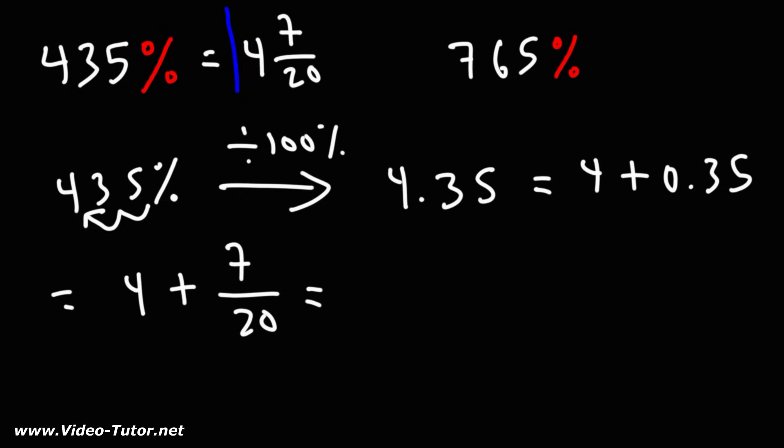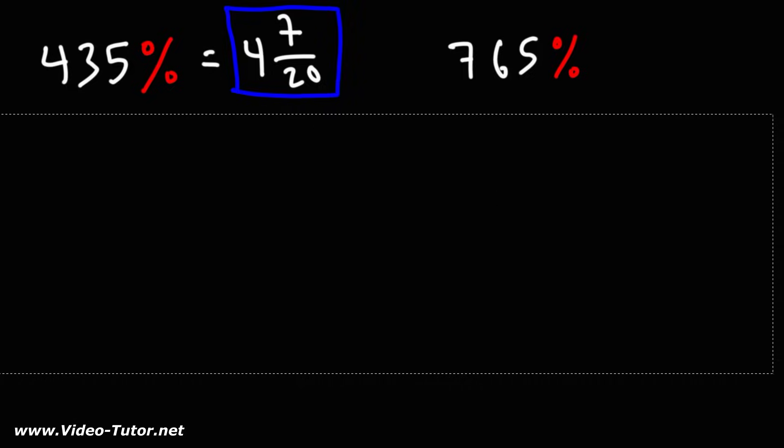That is, 7 over 20. So that's how we can convert a percentage into a mixed number. Now, let's do the same for the next example.